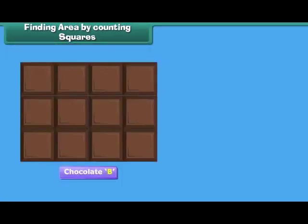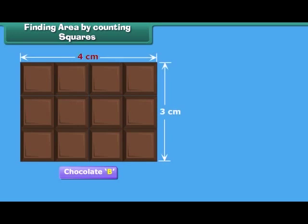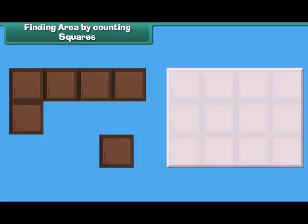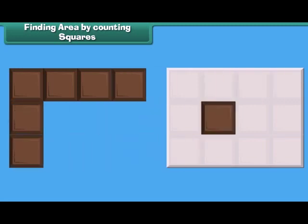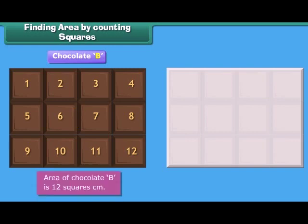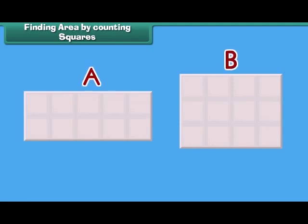Now let us find the area of chocolate B. The length of chocolate B is four centimeters and its width is three centimeters. So four squares can be arranged along its length and three squares can be arranged along its width. In total, twelve squares can be arranged on this chocolate. Its area is twelve square centimeters. So among chocolates A and B, chocolate B is bigger in size.